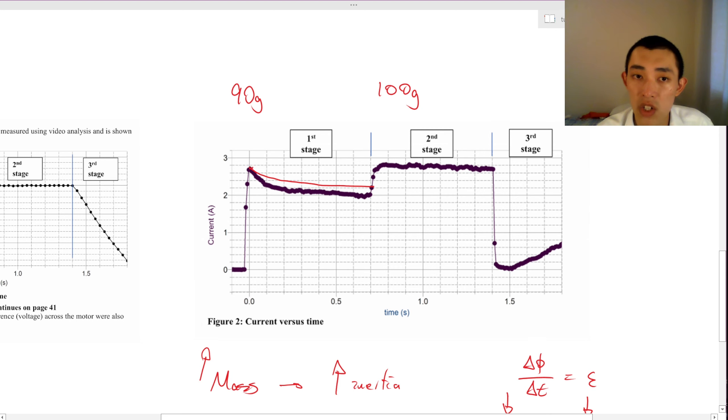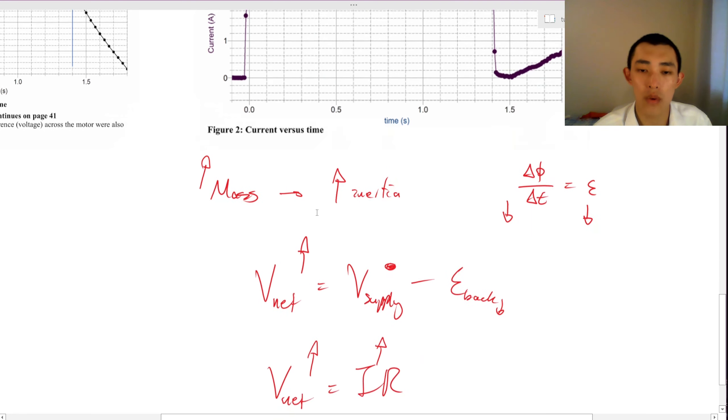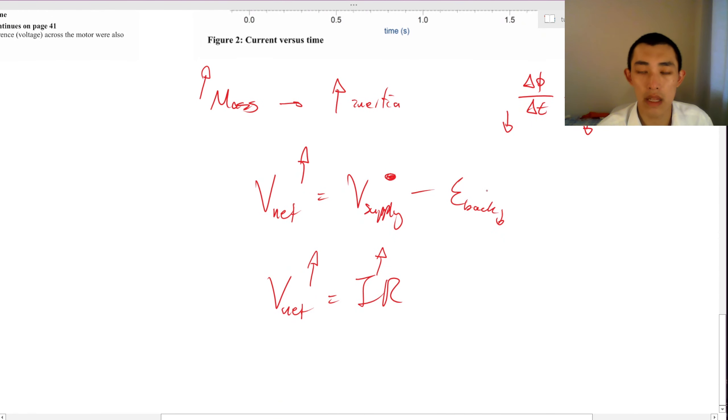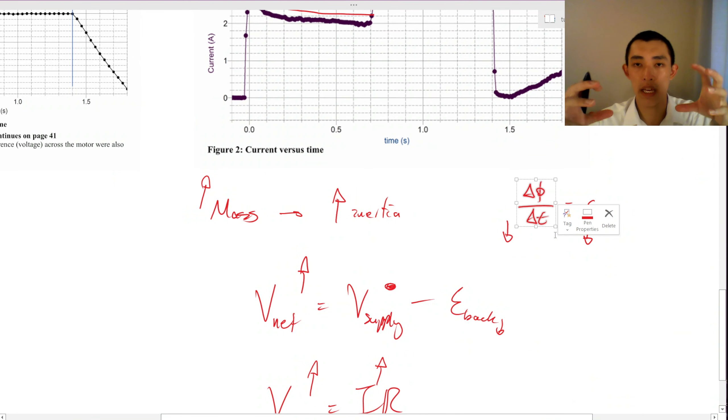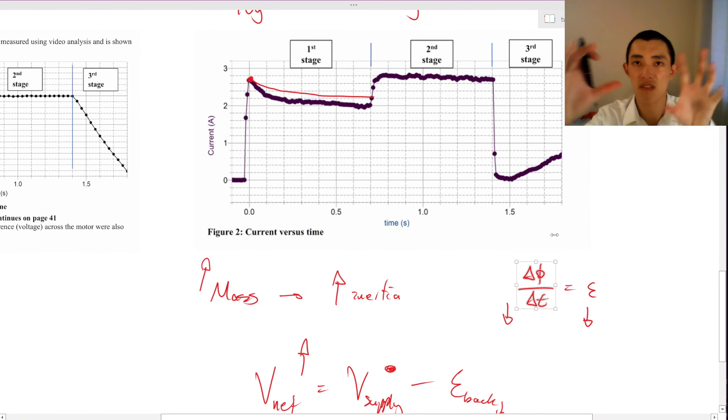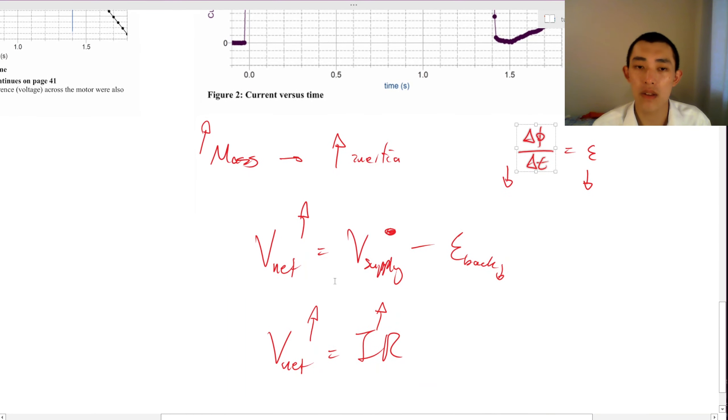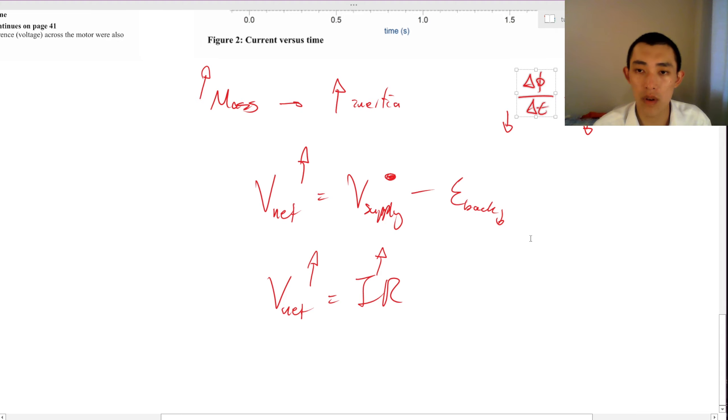But should the peak change? No, the peak doesn't change because the peak was formed when, at the very, very, very start, there is no rotation at all because the armature is super duper slow. It hasn't started turning. So that means that the back EMF is zero, and so therefore V net is equal to V supply.